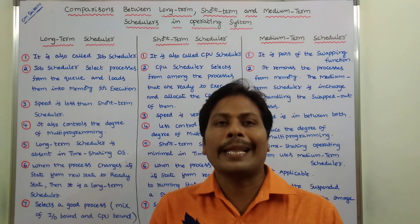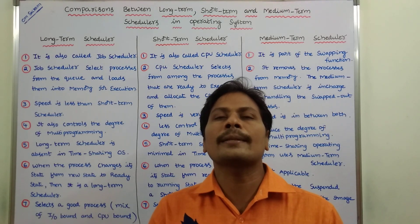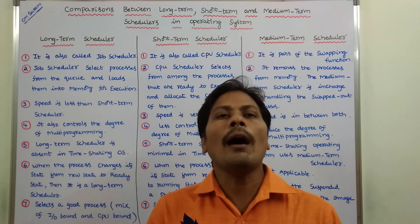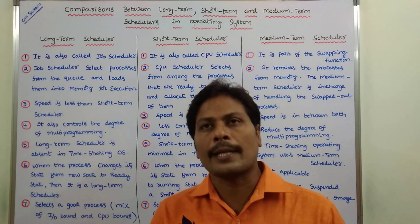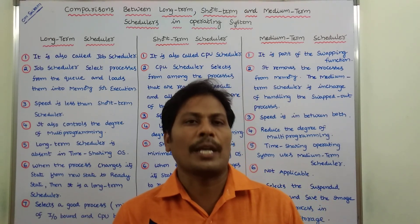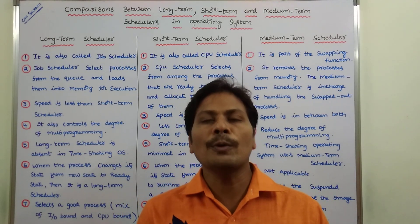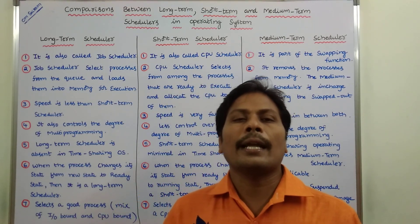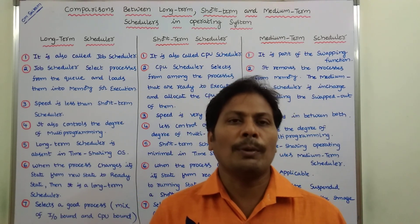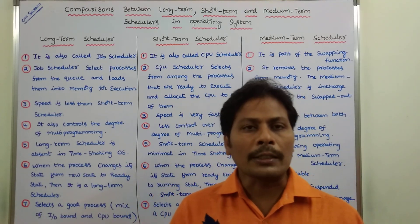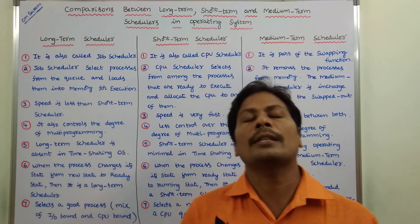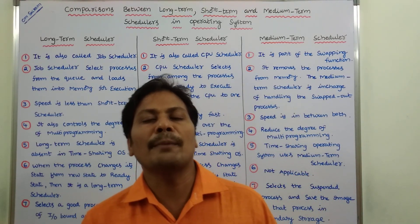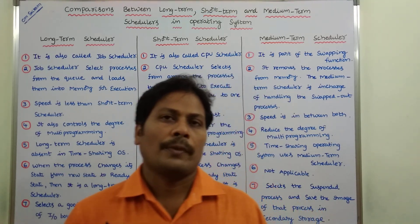Scheduling is nothing but allocating the CPU to one of the processes among the n number of processes for execution. For that purpose, we have to use a scheduler. Commonly, there are three types of schedulers: the first one is long-term scheduler, the second one is short-term scheduler, and the third one is medium-term scheduler.